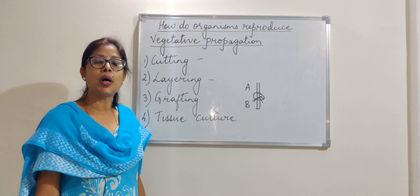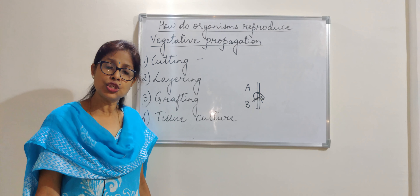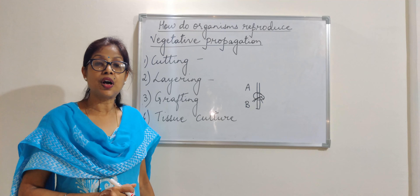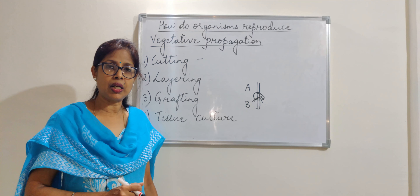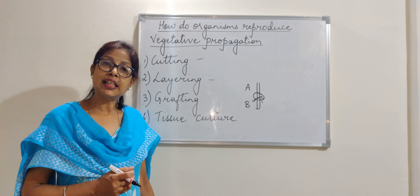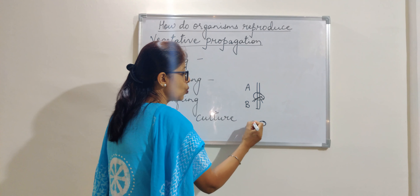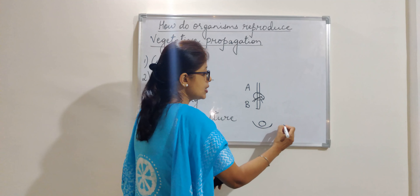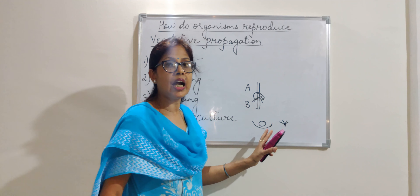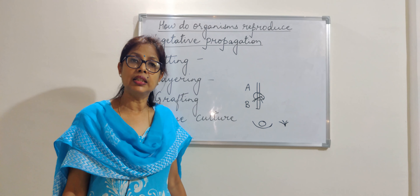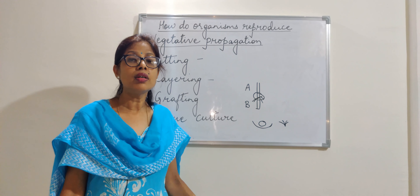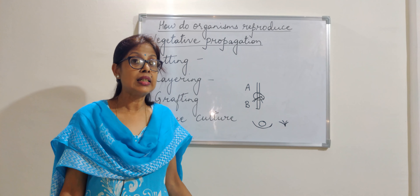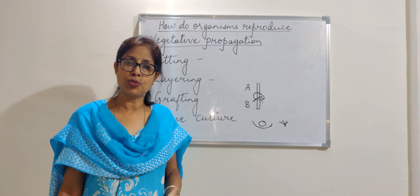The last method is tissue culture. In tissue culture, the growing parts of the plant — as you know, meristematic tissue is found in the growing parts — a part of that tissue is taken and grown in the laboratory. Once this tissue takes the shape of a plant, it is removed and grown in the field. These are commonly used in plants like paddy, chili, or tomato.